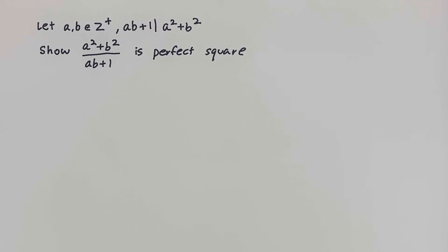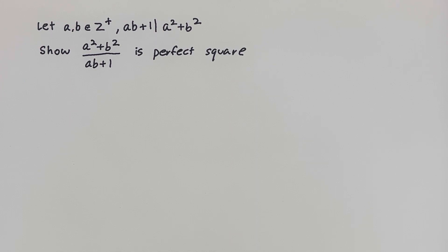In this problem, we have a problem that at first glance looks like something you might see in an advanced algebra class. It seems doable. Let a and b be positive integers such that ab plus 1 divides a squared plus b squared. Now show that a squared plus b squared divided by ab plus 1 is a perfect square. However, this problem is deceptive. This is not from a textbook. This is from the 1988 International Mathematical Olympiad, or IMO, and it is widely considered one of the most difficult and beautiful problems proposed in the competition's history. So the question is, can we solve it?